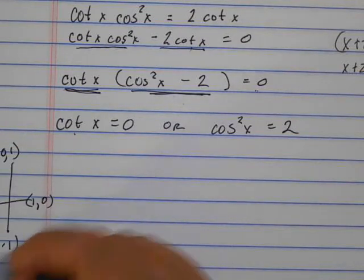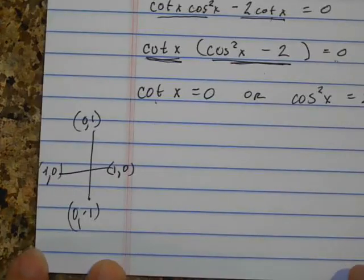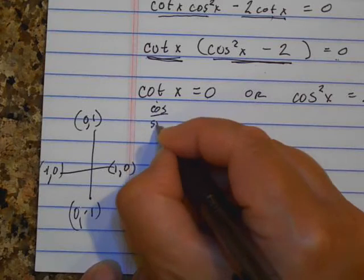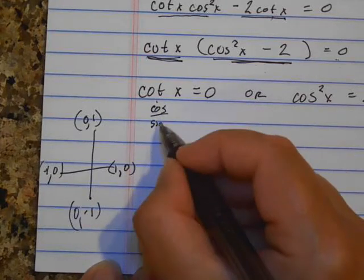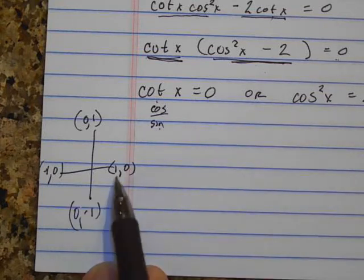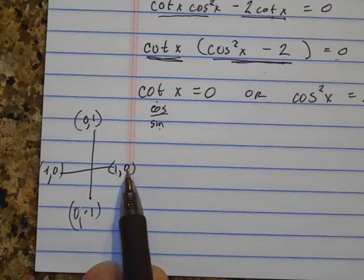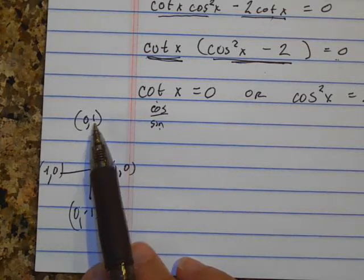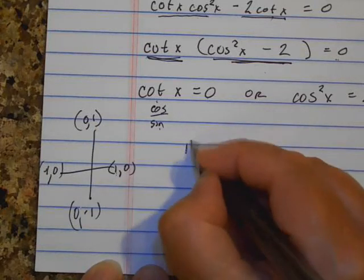So I'm going to think about the unit circle like this. So cotangent is cosine over sine. So I'm going to look at the places where the x value over the y value would give me 0. So if I do the x value over the y, that would be undefined. Here, if I do 0 divided by 1, I would get 0. So that means this is one of the spots where we'll find our answer.